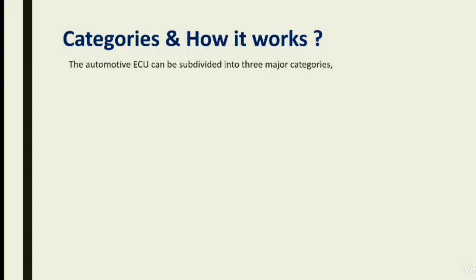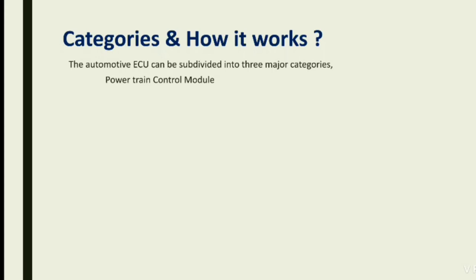The automotive ECU can be subdivided into three major categories. The first is the Powertrain Control Module — which includes the engine control module. The second is the Body Control Unit, which controls all the body parts beyond just the engine. The third is the Chassis System. These are the three major categories in ECU, and you need to know which category you are working in.